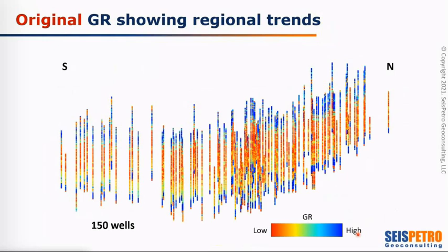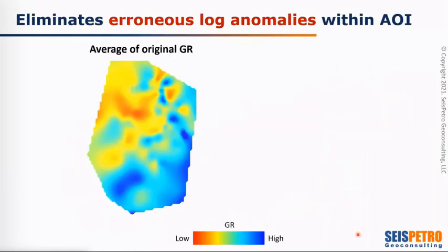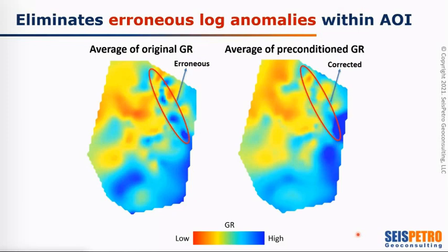In this example we can see the original gamma ray showing the original trends. This is an example of the gamma ray normalization or preconditioning. You can see in the arrow to the left the lower gamma ray values — the red is the low values, the blue is the high values. When you go to the north, we can see an increase in that small interval, increasing the gamma ray. This is the original gamma ray; this is the preconditioned gamma ray. You can see there are small changes in the wells, but the regional trend is preserved. In map view, we have the average original gamma ray for this interval, where we can see the erroneous values. After the preconditioning, the data has been cleaned up, but the regional geologic trends are preserved — which is what we need for any further petrophysical modeling.